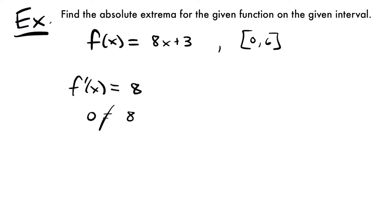And if you think about this, it makes sense, because 8x plus 3 is a linear function. If you were to look at the graph, it would just be a straight line that increases forever, so there would be no point where the slope is zero — it's always going to be 8. But on this interval from 0 to 6, we can still have a maximum and a minimum. So let's plug in our endpoints.